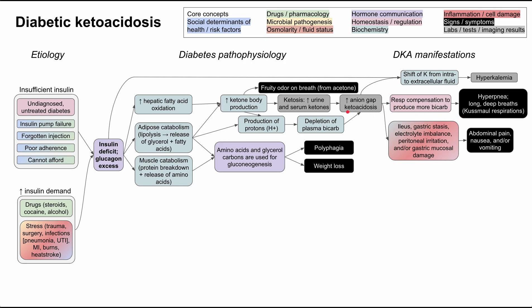The acidic high anion gap ketoacidosis state can also cause abdominal pain, nausea, and/or vomiting through several proposed mechanisms: ileus, gastric stasis, electrolyte imbalance, peritoneal irritation, and/or gastric mucosal damage. Additionally, this high anion gap ketoacidosis alters neural function, which is one of the contributors to altered mental status in patients with DKA.